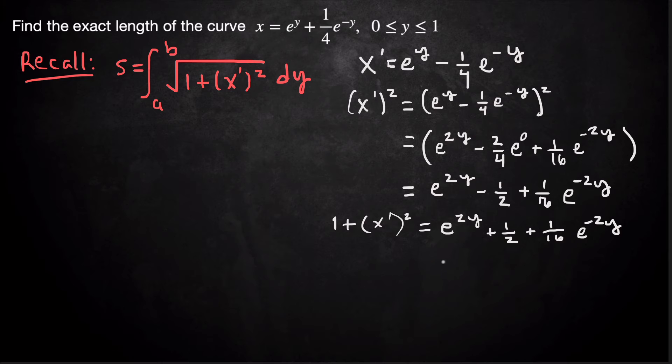And this is actually a perfect square. So what happens a lot of times with these arc length integrals is we get a perfect square under the radical so that the radical will go away. And the perfect square that we get is (e^y + (1/4)e^(-y))². So that's actually the thing under the radical whenever we evaluate this integral.